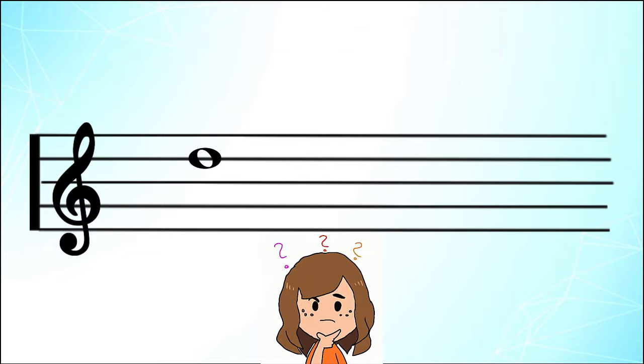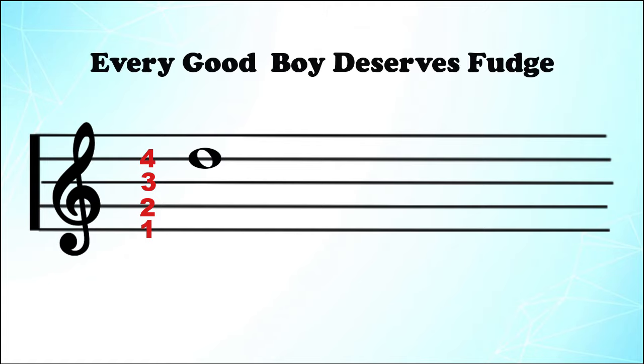Which note is this? I can see that it's not on the first, second, or third line, but it's on the next line, the fourth line. So if we stop at the fourth line of our phrase, every good boy deserves. Deserves starts with a D. That means that note is the letter name D.